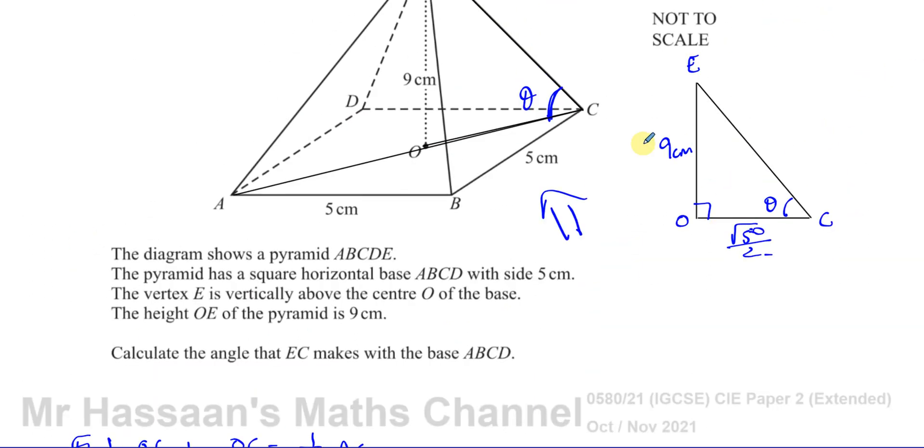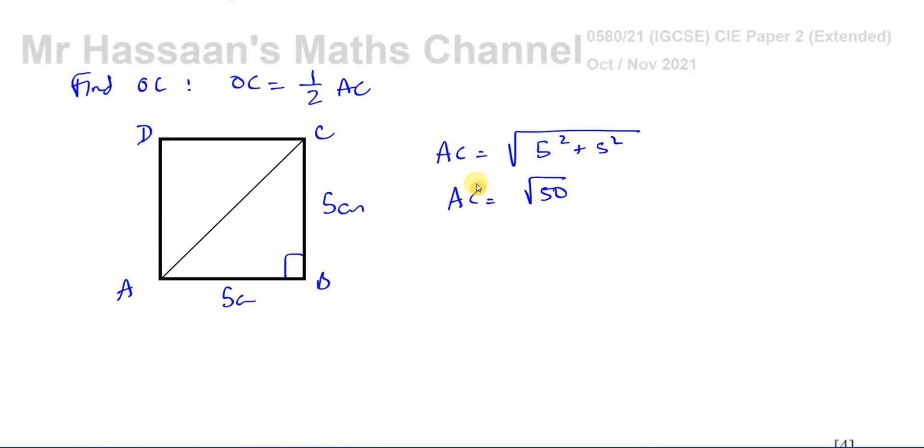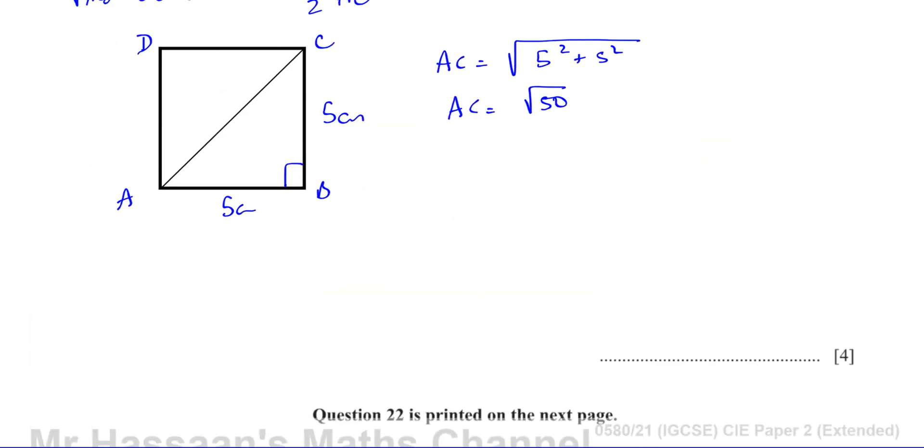So now I can use this triangle here that I need. I'll just copy it and put it down here so that we can show the steps properly. So we take this triangle here and we can say that the tangent of theta, because we have the opposite and the adjacent, is equal to 9 over the square root of 50 divided by 2.